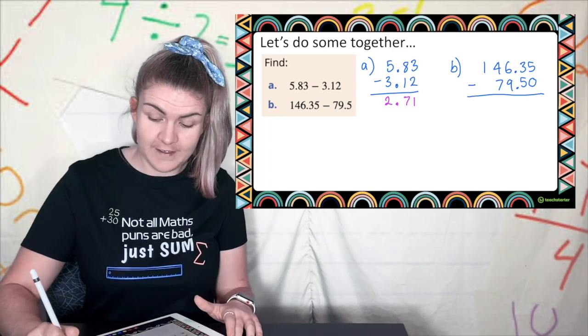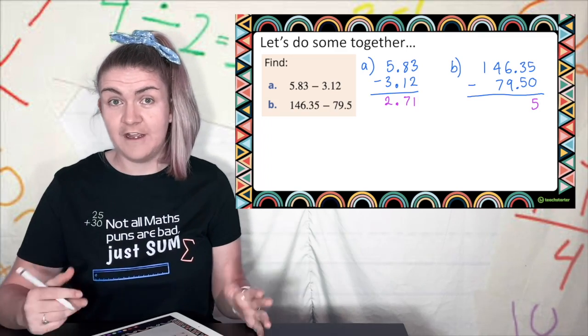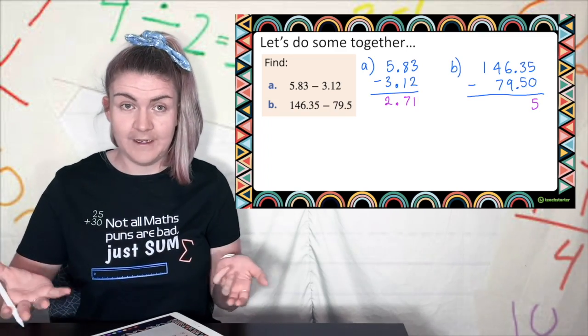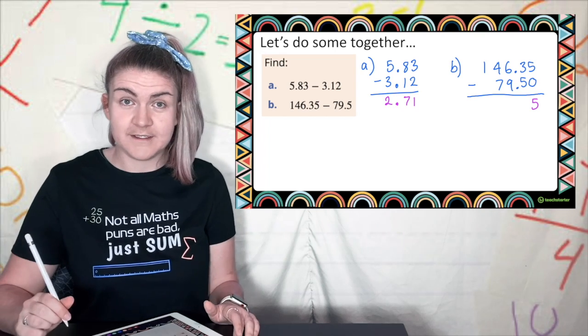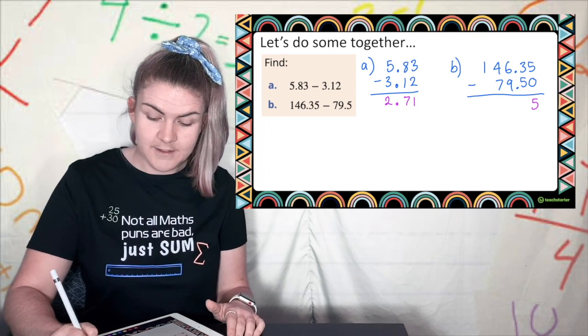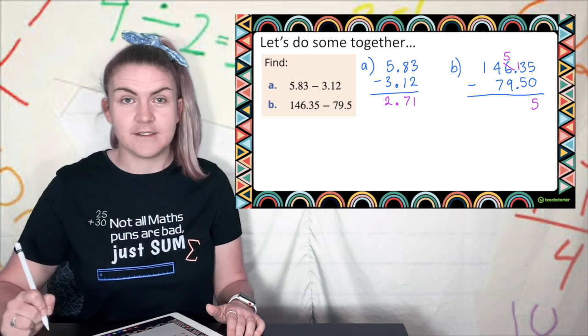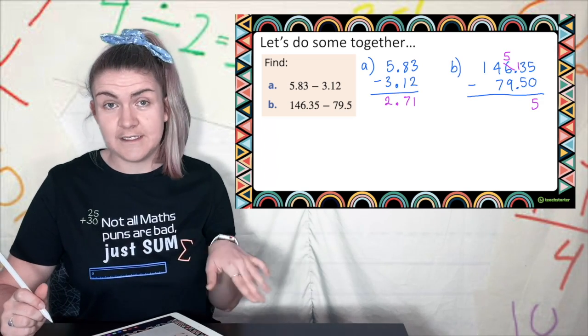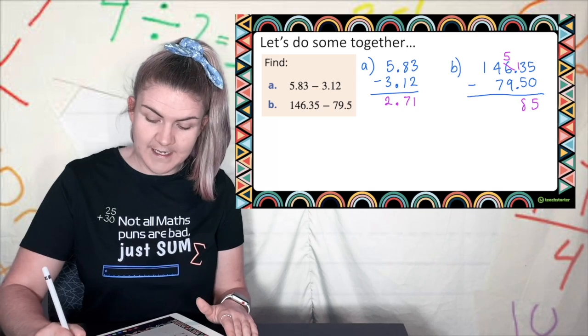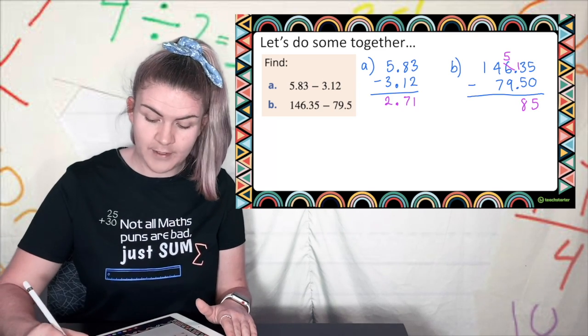5 take away 3 is 5. 3 take away 5 we can't do because 3 is smaller than 5 so we're going to borrow from the person next door. This time it's the ones. So I cross out the 6 it becomes a 5 and I put a 1 next to the 3. Now it's 13 take 5. 13 take 5 is 8. Now we've hit a decimal point put it in.